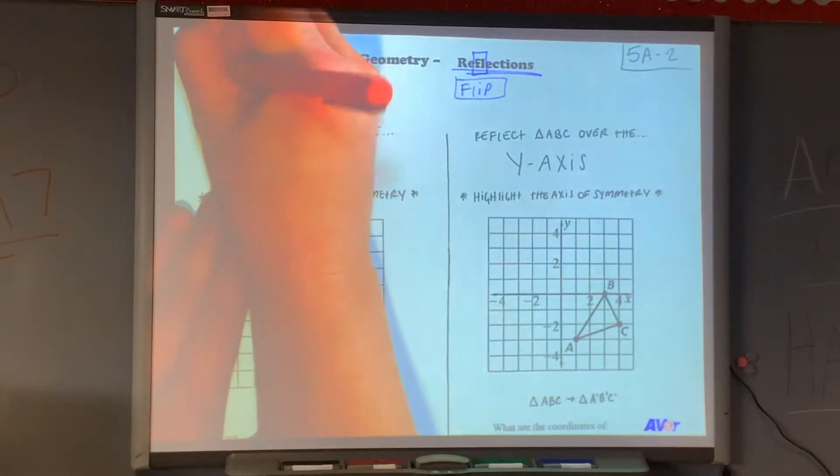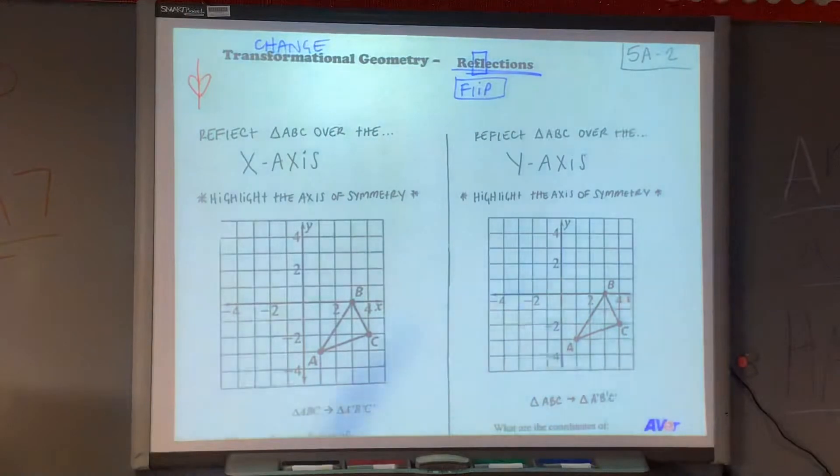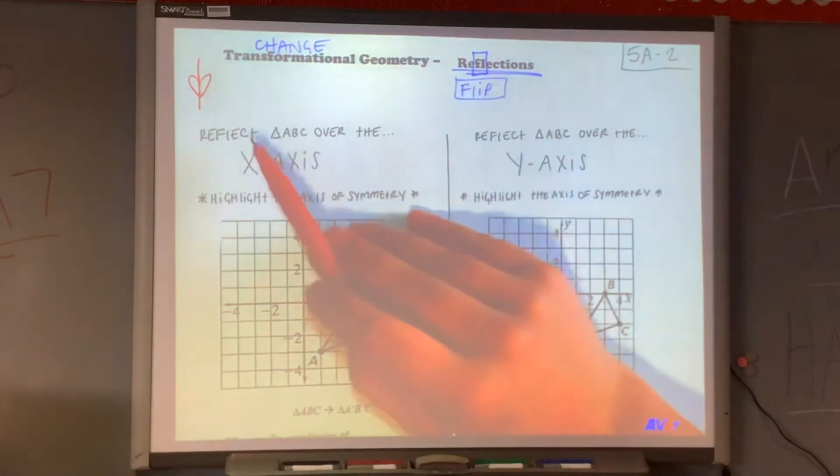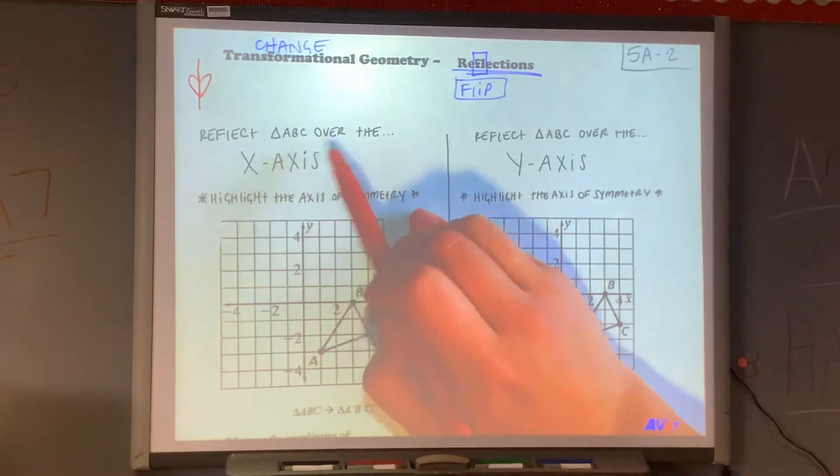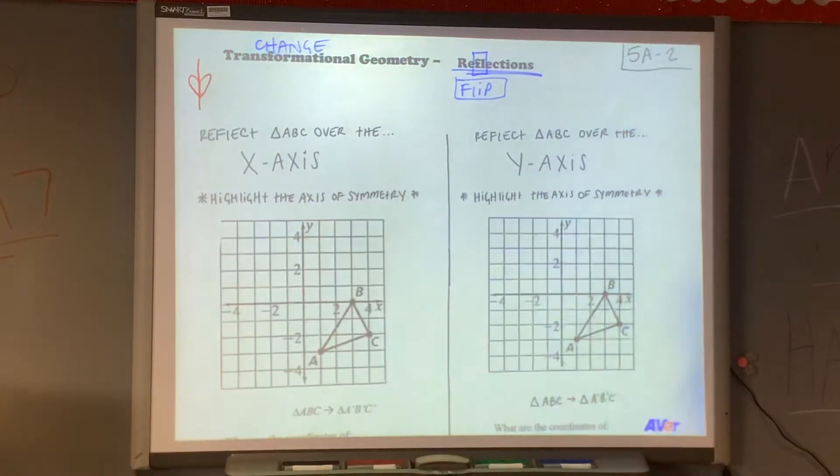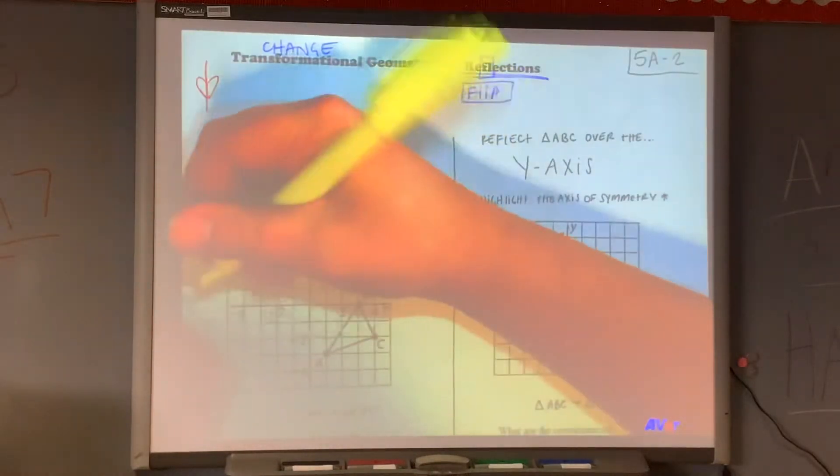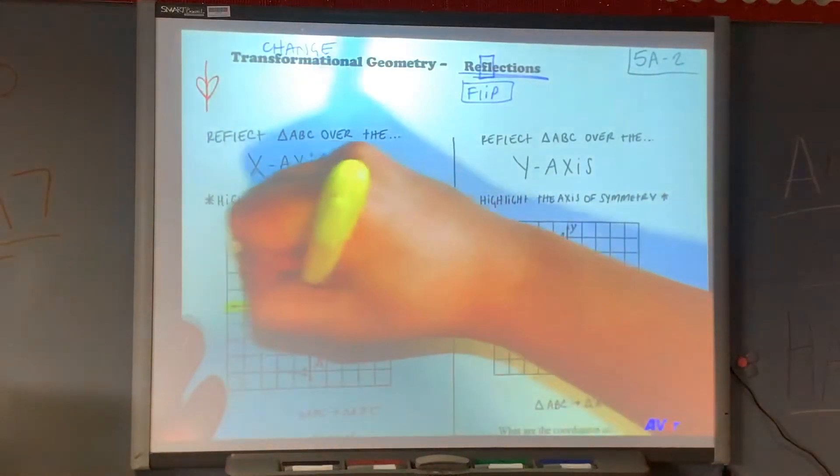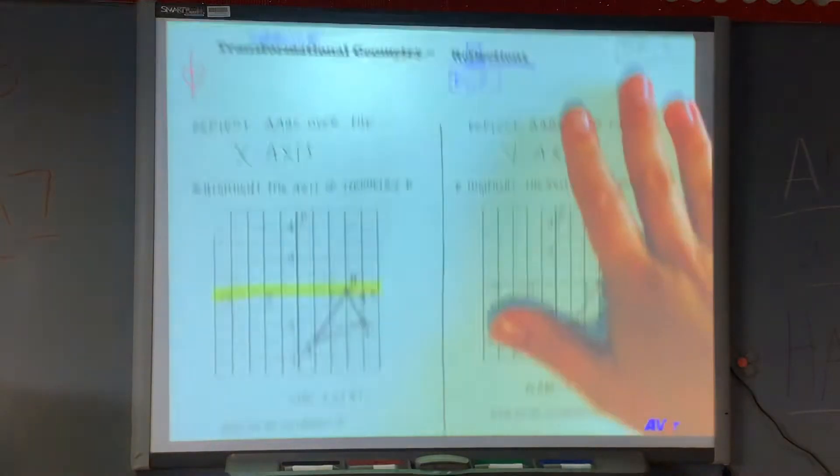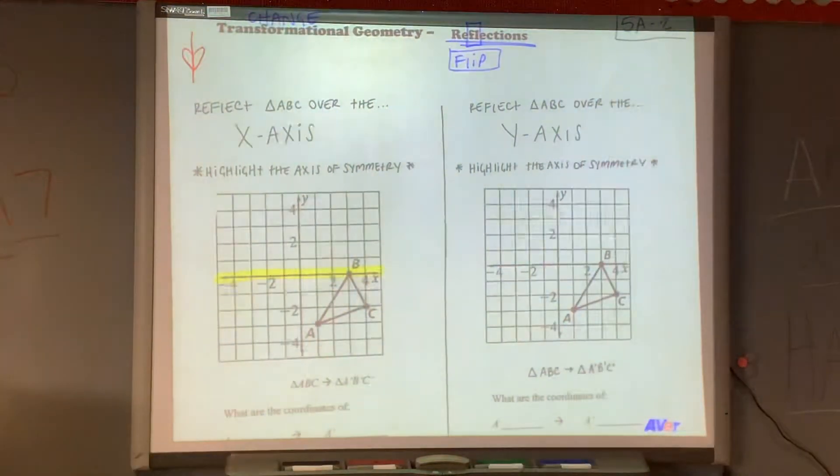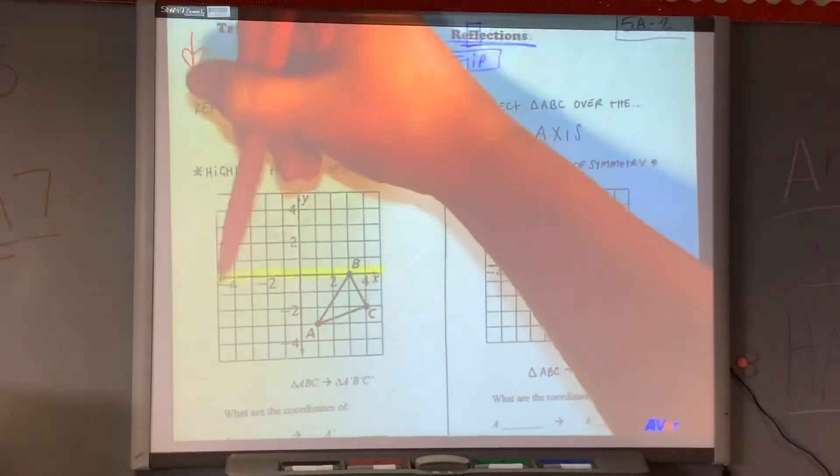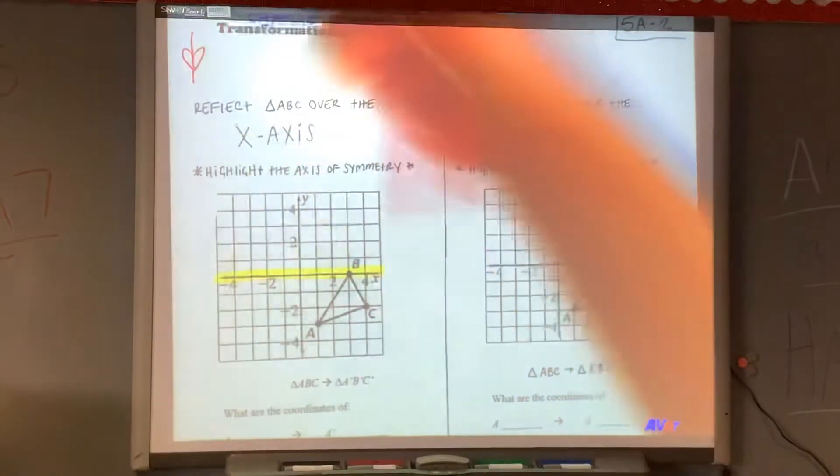So if I had a heart, a line of axis of symmetry would cut straight through there and make it perfectly the same on either side. It just completely flipped. So the first thing says, reflect triangle ABC over the x-axis. And I said to highlight the axis of symmetry. That's a one for me. If you have highlighters, definitely use highlighters. But if you don't, it is okay.